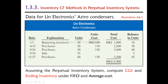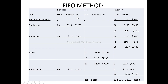In the beginning inventory section, we have unit cost and total cost. If you purchase 20 units, that goes into the purchase section. You can then choose the sale section. This purchase of 20 units is the first one entered.